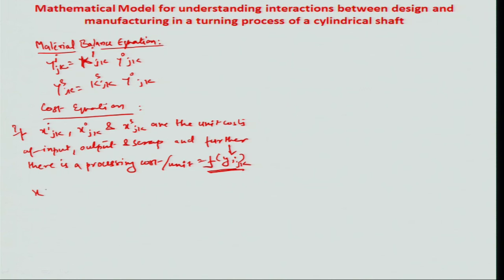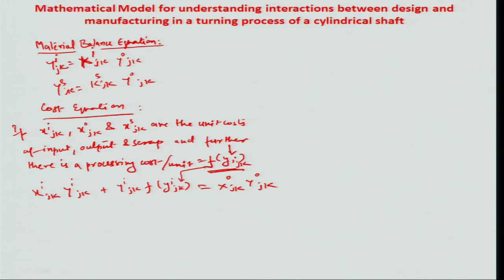The cost equation is: the input cost is x_ijk times y_ijk (number of inputs), plus the processing cost per unit times the number of units. This total cost of converting input into output can be represented as the output unit cost x_ojk times the output level, plus the scrap cost x_sjk times the number of units of scrap. This is the cost balance equation — one must be able to at least balance this cost to create a manufacturing system that is viable.